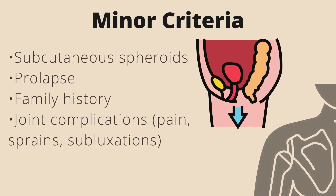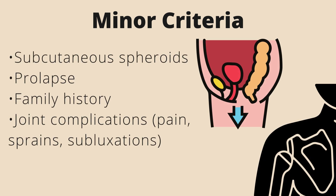Further minor criteria include subcutaneous spheroids, which are small, hard nodules that are calcified fat lobules that have lost blood supply. They are movable under the skin and often found over the arm and leg bones. Additional criteria include prolapse, which is a descending or drooping of organs, and family history.